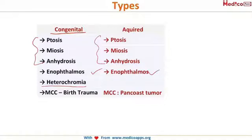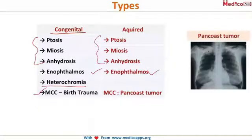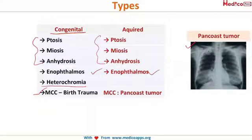The cause of congenital Horner's syndrome is birth trauma. In acquired Horner's syndrome, the important cause is a Pancoast tumor — a tumor at the apex of the lung, which can be seen on chest X-ray.